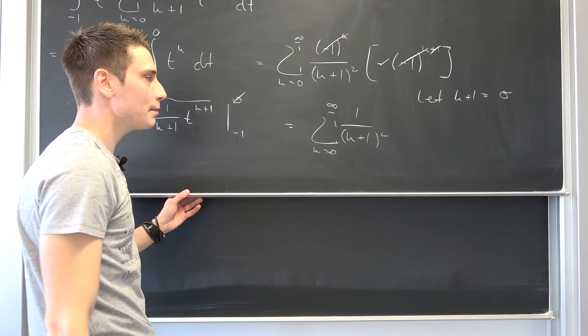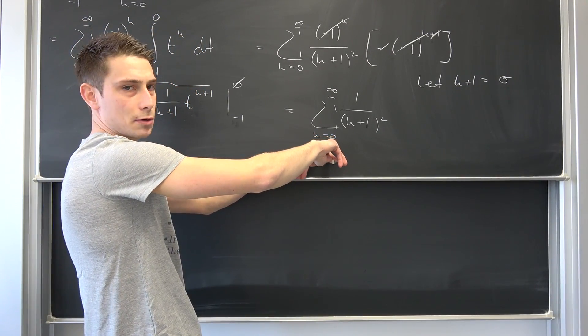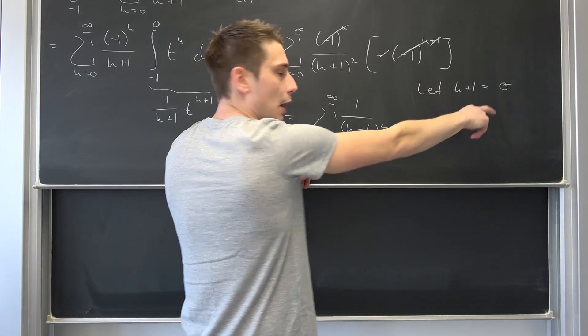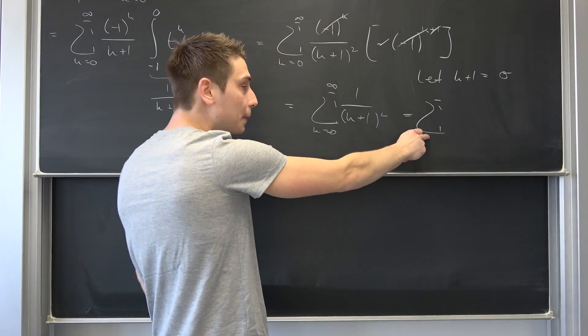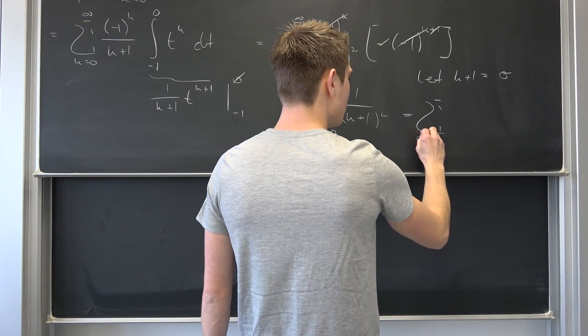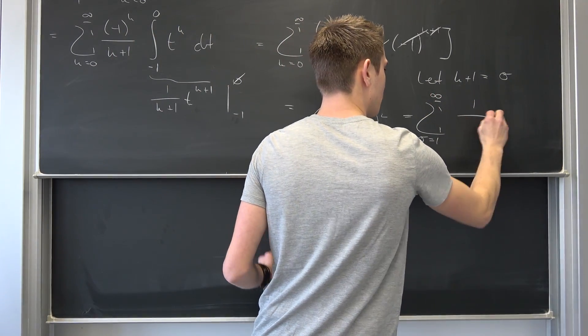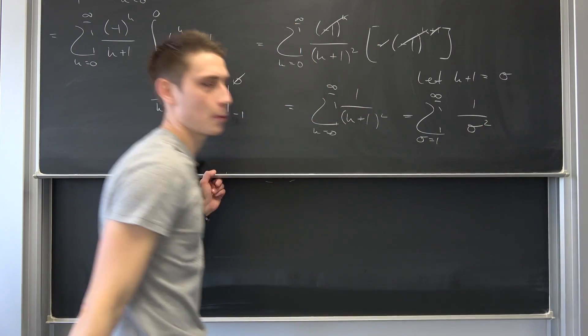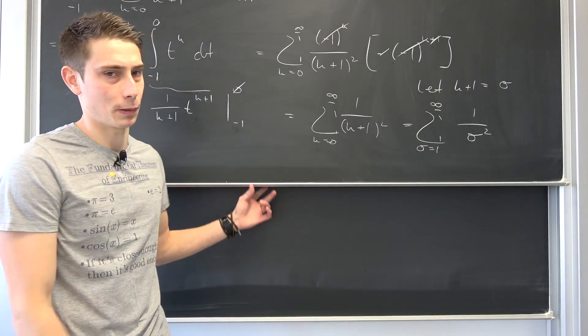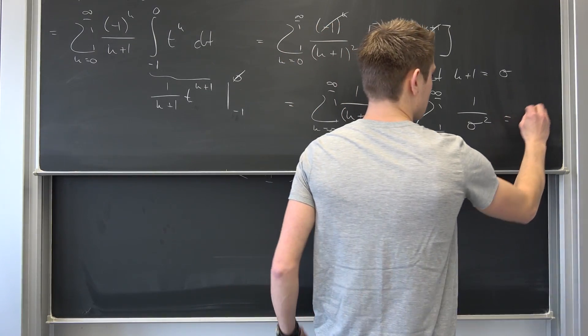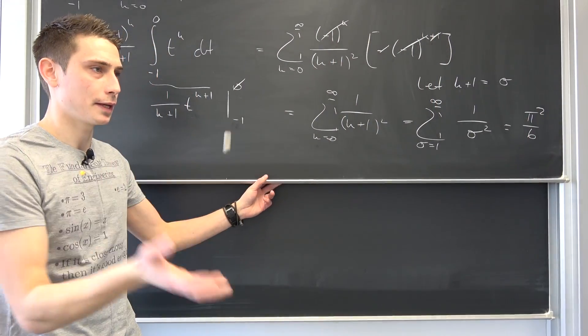So now our sum is going to run from, okay, from k equals 0. If you plug 0 into here, our sigma is going to run from 1. So we have big sigma of sigma running from 1 to infinity of 1 over sigma squared. And well, I've derived this before, this right here is nothing but the Basel problem. So overall, this is going to give us pi squared over 6. Yeah, and then we...